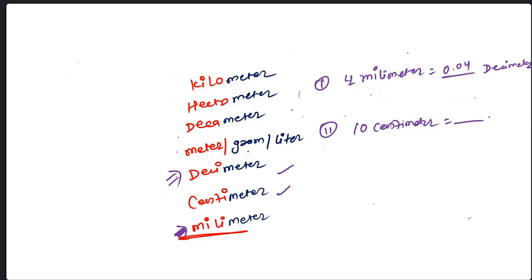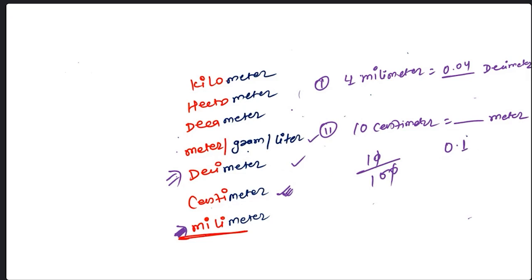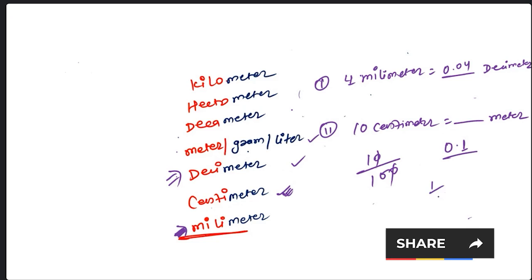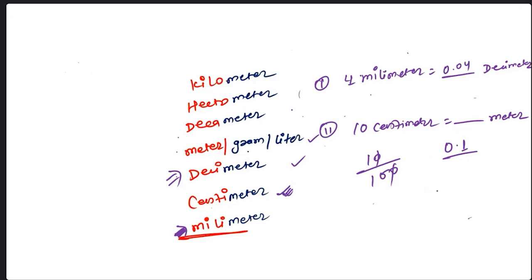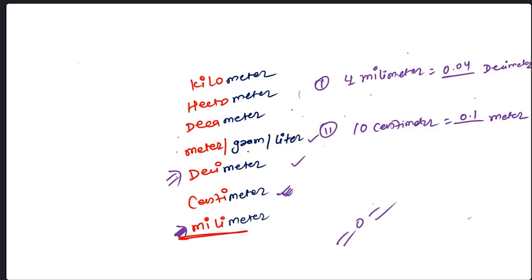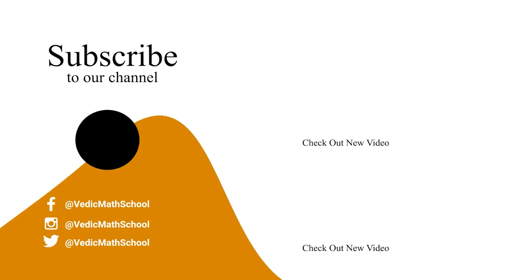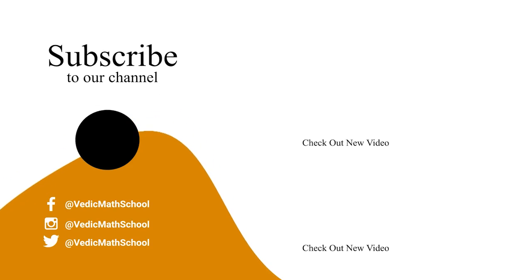For example: 10 centimeters equal to how many meters? Going from centimeter to meter is bottom to top. The difference is 1 and 2 — two steps. So divide 10 by 100. Count the zeros and place the decimal: 10 by 100 = 0.1. The correct answer is 0.1.